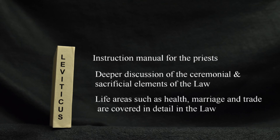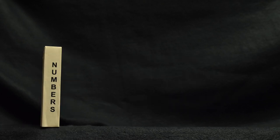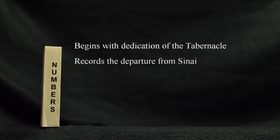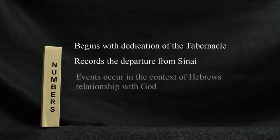Specific instructions for a number of subjects, including worship, trade, health, marriage, and other life areas are given in detail. Numbers combines elements of history and the law. The book begins with the dedication of the tabernacle and the Hebrews' departure from Sinai as they set out for Canaan under the leadership of Moses. The events recorded in the book occur within the context of the spiritual leadership of the people and their relationship with God.